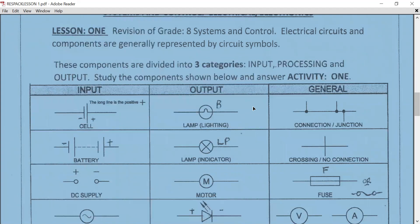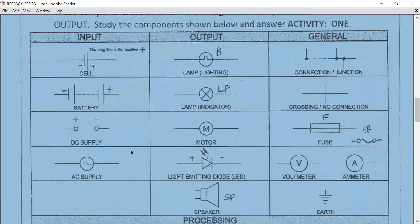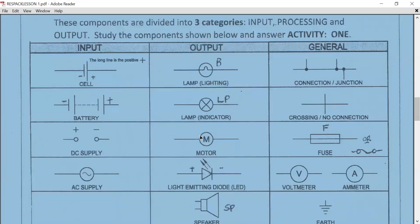Now let's look at the first column, the input column. Notice your cell, battery, and DC supply. Basically your supplies are in your input. Your output is anything that comes at the end - what does it do. For example, a lamp gives off light, a motor will start to rotate, a light emitting diode will light up. That's the output.